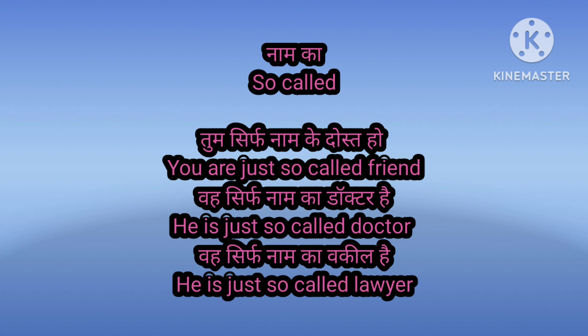The next structure is 'naam ka' (so-called). For example: tum sirf naam ke dost ho (you are just a so-called friend), woh sirf naam ka doctor hai (he is just a so-called doctor), woh sirf naam ka vakeel hai (he is just a so-called lawyer). For 'naam ka' we use 'so-called'.